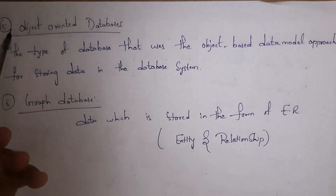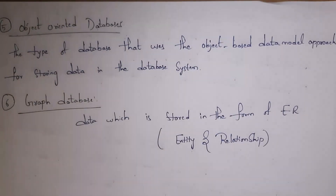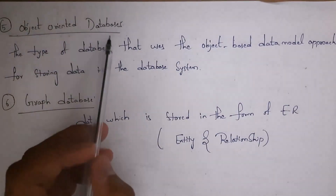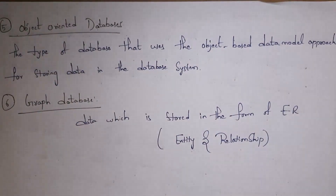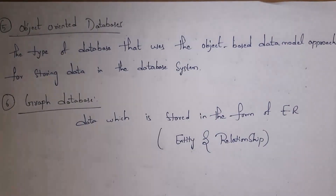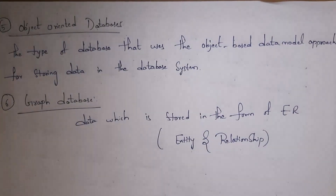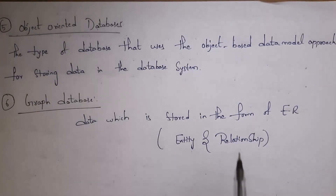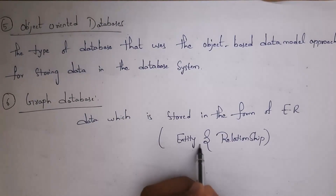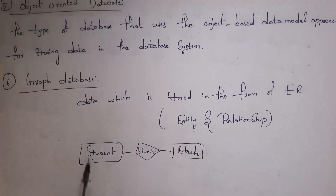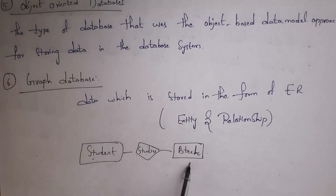An object-oriented database — for example, Python is an object-oriented programming language, and using Python itself we can create a database and perform various operations on it. A graph database is data stored in the form of ER (Entity-Relationship). For example, 'Student' and 'BTech' are entities, and the relationship between them is 'studies'.